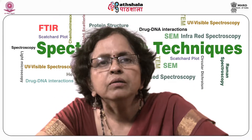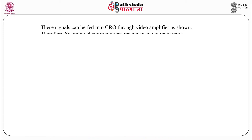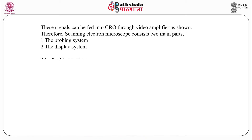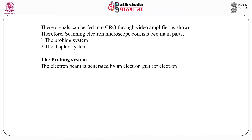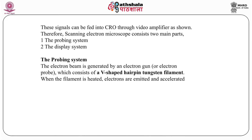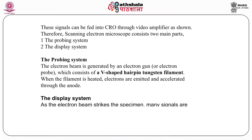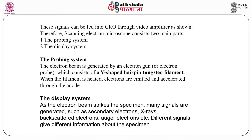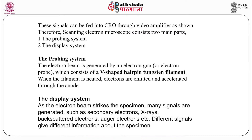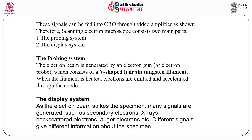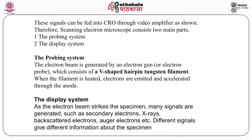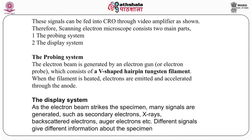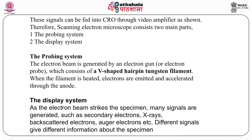In SEM, the signals can be fed into a CRO and the image is amplified. There are two basic components: the probing system and the display system. In the probing system, the electron beam is generated by an electron gun consisting of a V-shaped hairpin tungsten filament; this filament is heated so that electrons are emitted and accelerated through the anode. In the display system, after the electrons are generated and hit the specimen, many signals are generated such as secondary electrons, X-rays, and backscattered electrons.